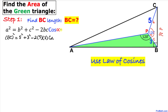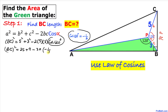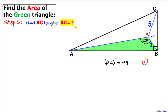We know that cos(120°) = −1/2, so let's substitute and simplify: BC² = 25 + 9 − 30 × (−1/2), which becomes 34 + 15. So BC² = 49. I am going to call this equation 1.